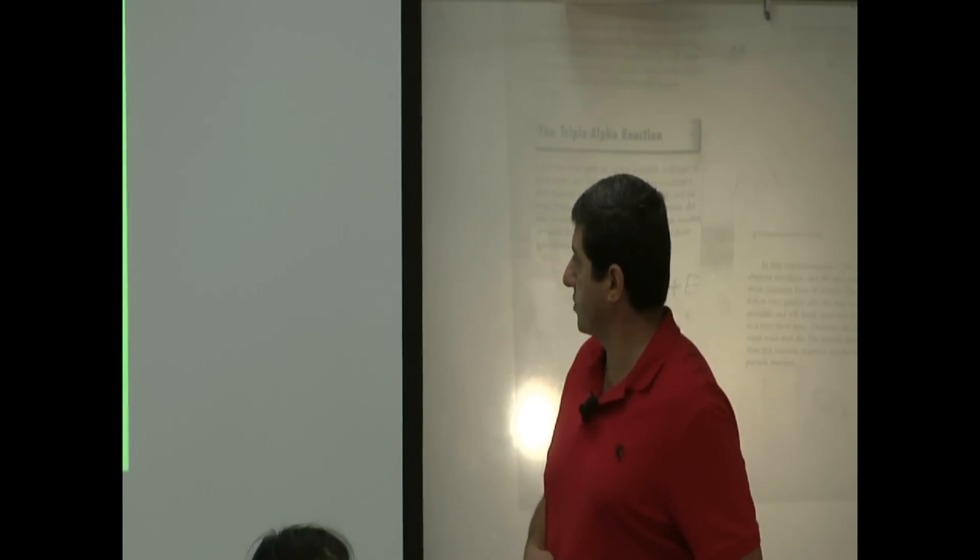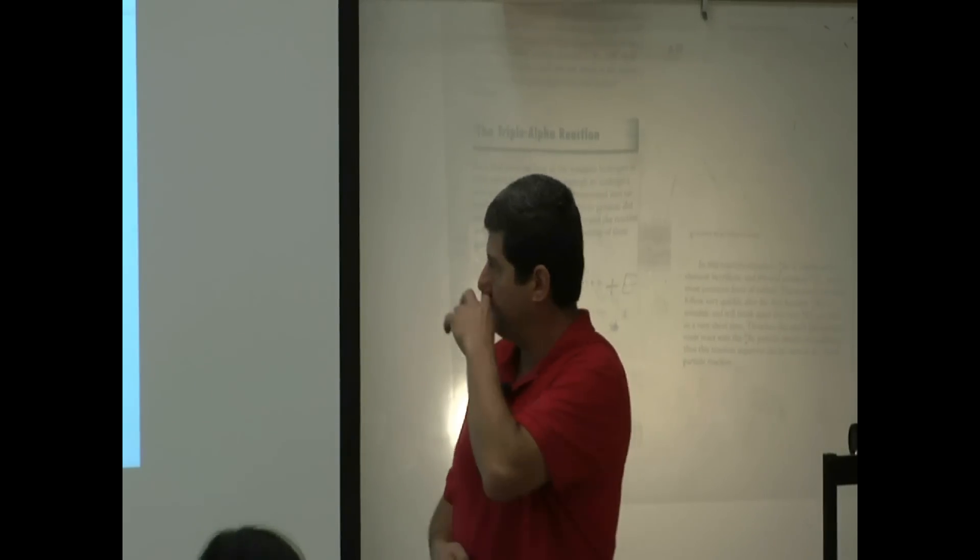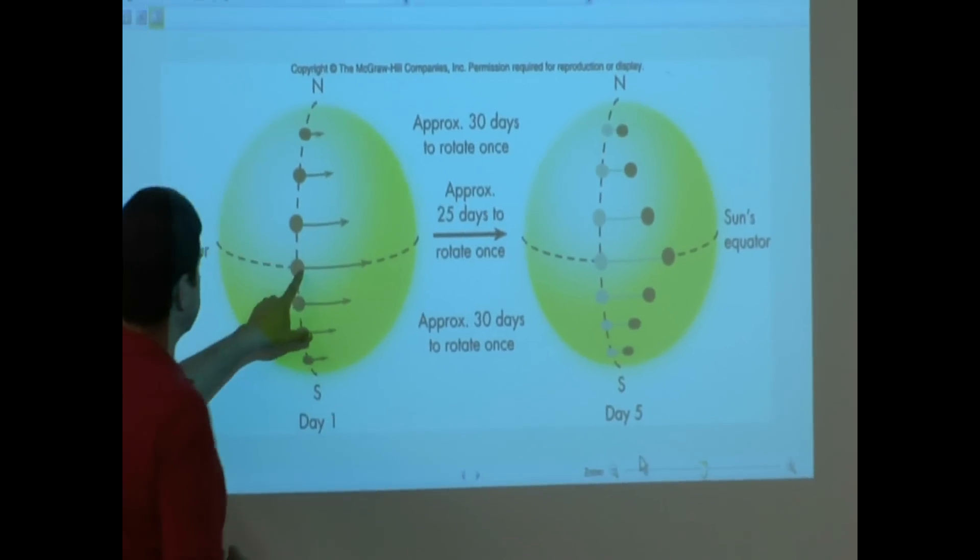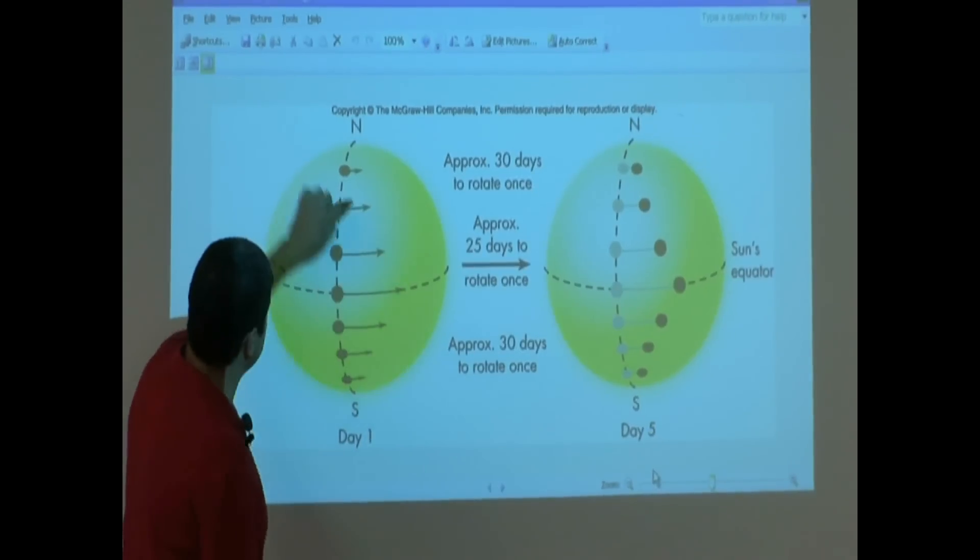Let's see here this picture. You see here? The Sun, if we look at sunspots, the Sun looks like it's rotating faster in the equator. You see the poles? It's rotating slower.